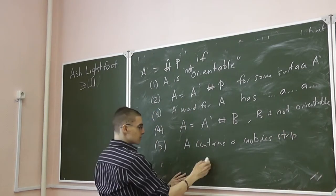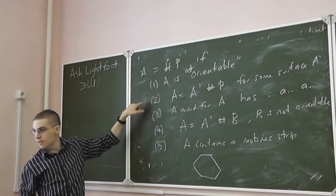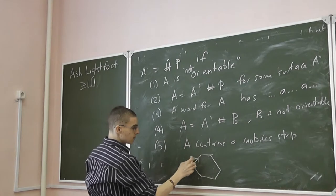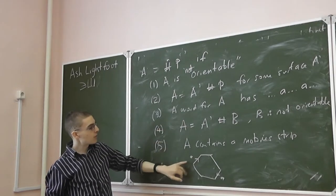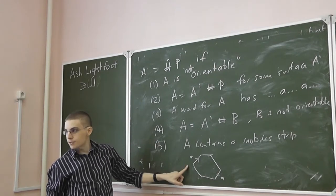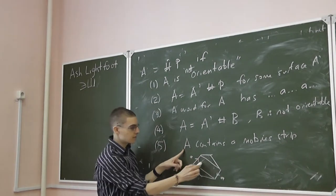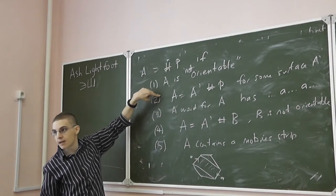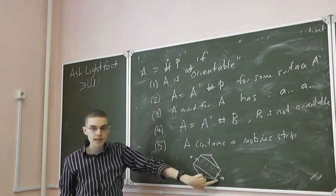Let's look at an example. All of those conditions are pretty much equivalent. That's why I was asking — here we start with the definition, and I was asking what are some equivalent definitions. We've already seen that this means that we have a word with AA, which is also equivalent to A containing a Möbius strip visible in the gluing diagram.